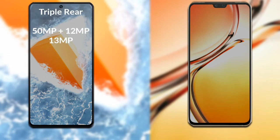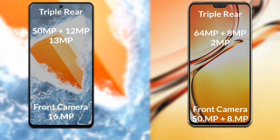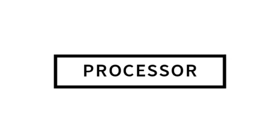Now let's compare the cameras. The Vivo iQOO 9T has a rear triple camera setup: a primary 50-megapixel sensor, a secondary 12-megapixel sensor, and a third 13-megapixel sensor, with a 16-megapixel front camera. The Vivo V23 has a rear triple camera: a primary 64-megapixel sensor, an 8-megapixel secondary sensor, a 2-megapixel third sensor, and a dual front camera of 50-megapixel plus 8-megapixel.